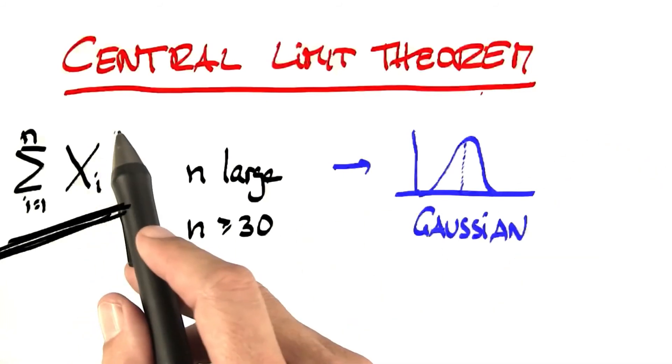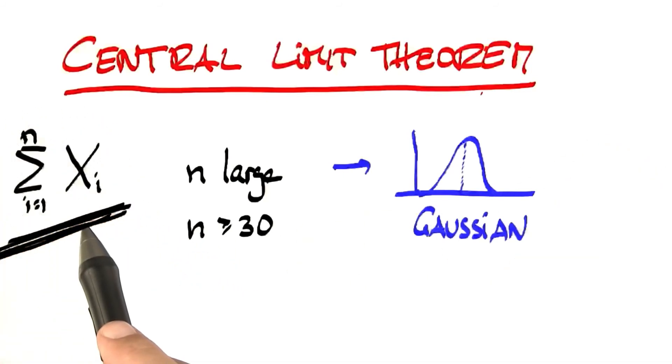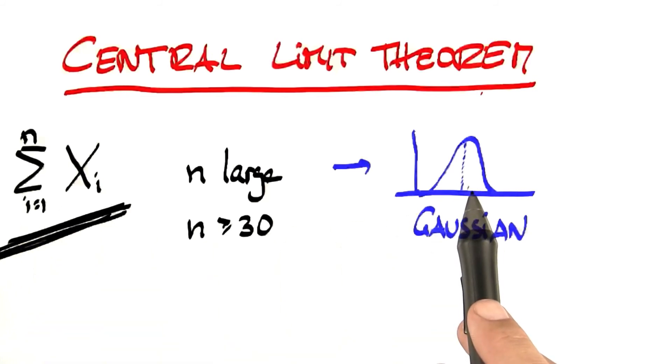The key thing to remember is you take many experiments, you add them up, and out comes a function just like this. That's called the central limit theorem.